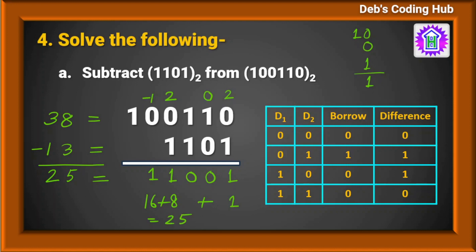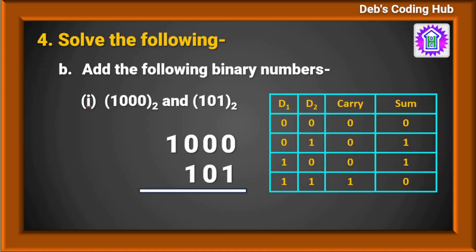Hope you have understood how to subtract. Let us move to the next question which is binary addition. We will be adding 1000 and 101. Let us see the addition table: 0 plus 0 is 0 with no carry; 0 plus 1 is 1 with no carry; 1 plus 0 is 1 with no carry; 1 plus 1 is 10, so 0 is the sum and 1 is the carry.